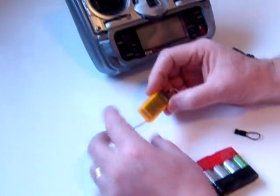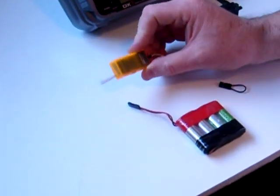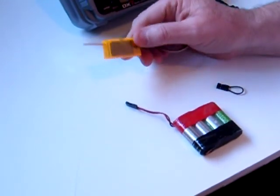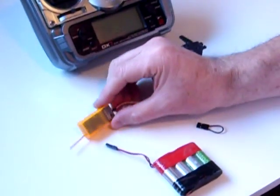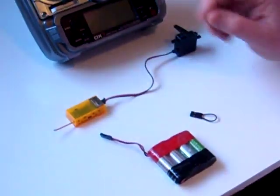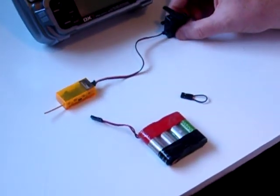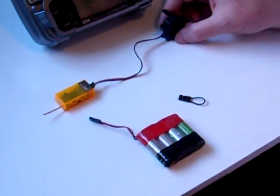This is actually an orange cloned version of a Spectrum receiver, but the procedure is exactly the same. You'll see I've got a servo plugged into one of the channels, in this case elevator. This is just so we can confirm all is correct after we've finished the procedure.